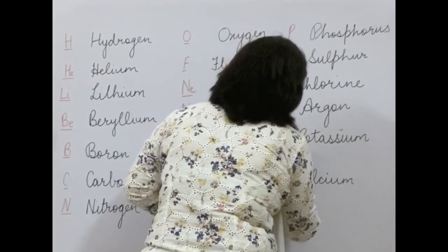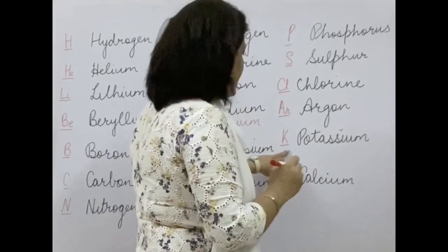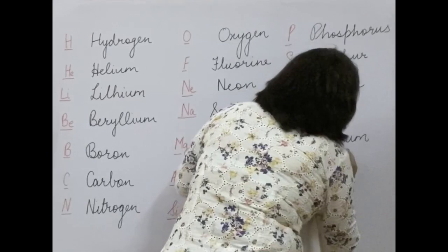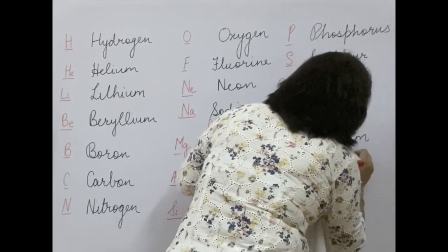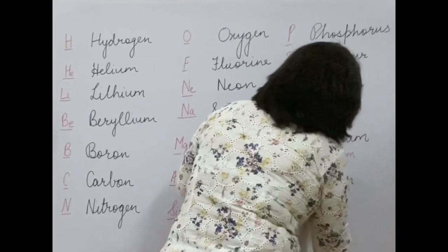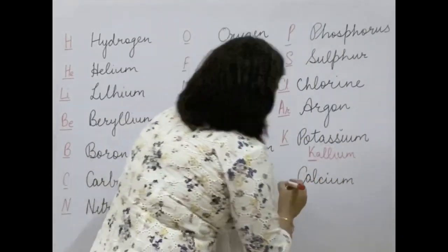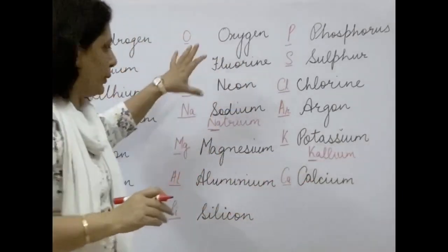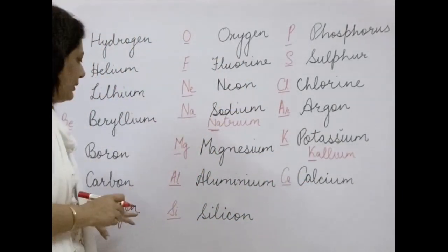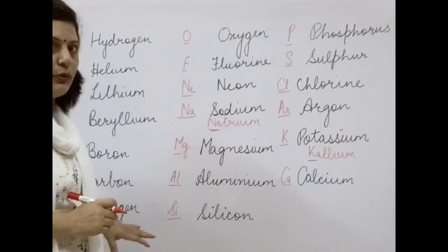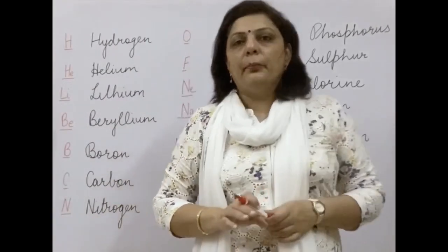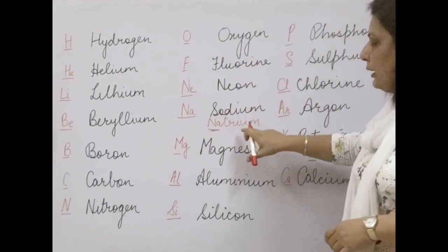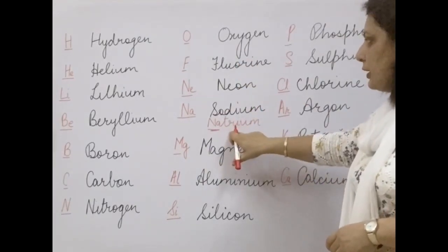Potassium is denoted by K — again, why K? Because potassium is derived from the Latin word kalium, and K is the first letter of kalium. Then calcium is Ca. So these are the first 20 elements you are supposed to learn, and they are very commonly and frequently used in our periodic table.